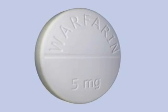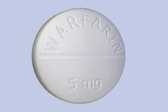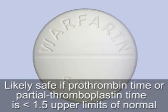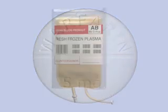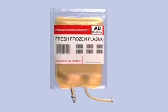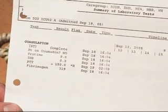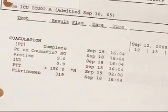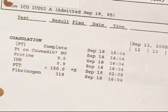Limited data exists regarding the safety of thoracentesis in patients with coagulation abnormalities. The procedure is probably safe in patients with mild or moderate elevations of the prothrombin time or partial thromboplastin time. The decision to use fresh frozen plasma or platelet concentrates in patients with clinically significant coagulopathy or thrombocytopenia must be made on an individual basis.